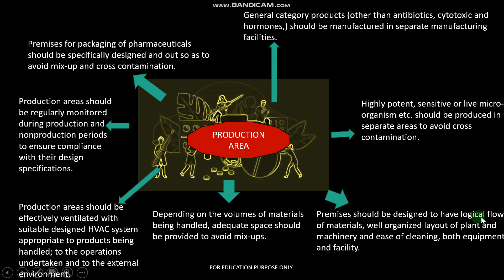The premises should be designed to have logical flow of materials, well-organized layout of the plant, and ease of cleaning both equipment and facilities. Depending upon the volumes of material being handled, adequate space should be provided to avoid mix-up. The production area should be effectively ventilated with an HVAC system. Production areas should be regularly monitored during production and non-production periods to ensure compliance with the design specifications.